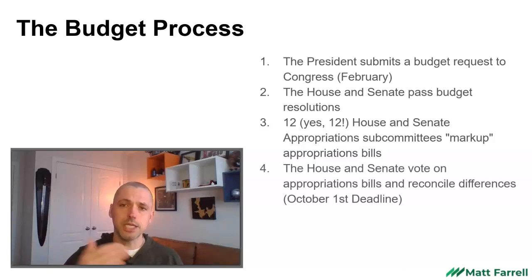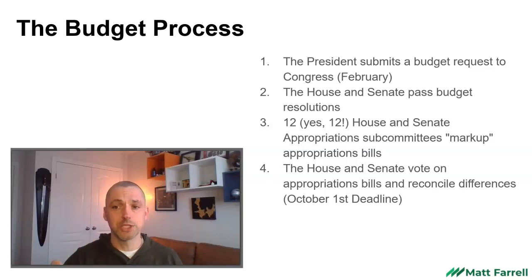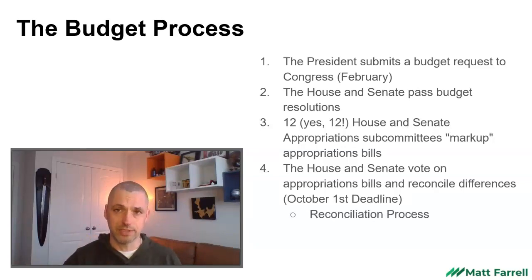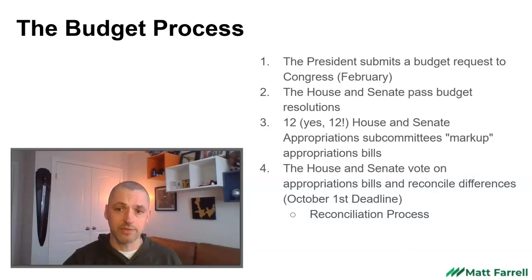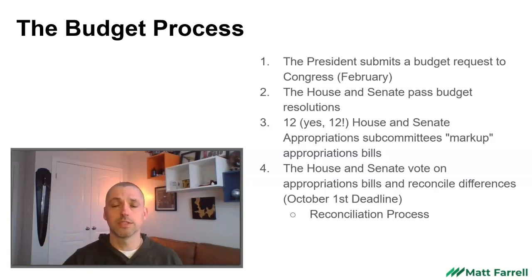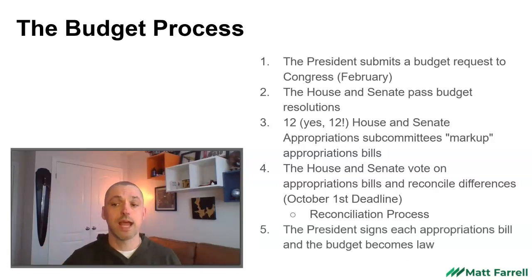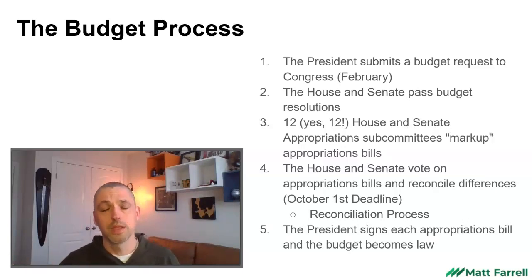Then each chamber will vote on those bills and a reconciliation committee will be struck. They need to reconcile the differences, and this is similar to the conference committee that is established when the two chambers disagree. There will be a committee to reconcile the differences and pass the budget agreements with a simple majority vote. Once that happens, the President can sign each of the 12 appropriations bills into law.